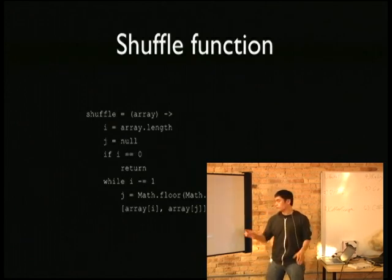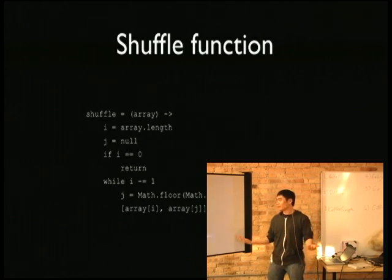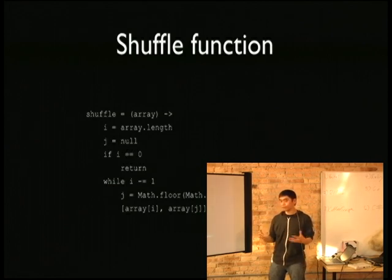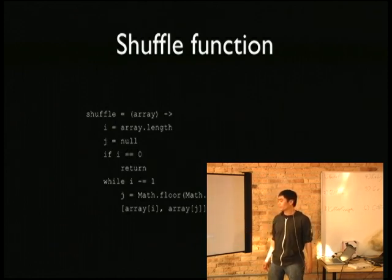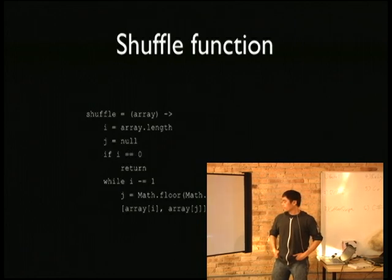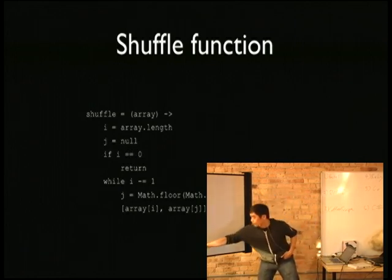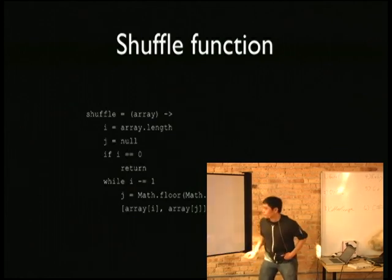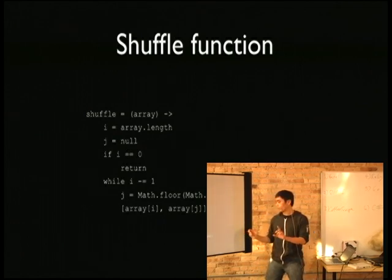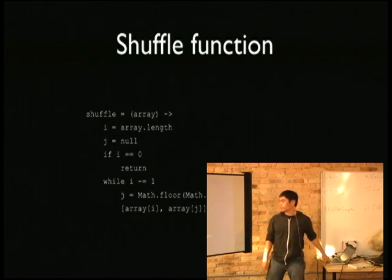CoffeeScript is very, very terse. There's no def keyword at all. The way you define a function is you just have this little arrow keyword — maybe that comes from Haskell — and the reason for that is to avoid having to write 'function' all the time, which you would do in JavaScript. You also see there's no colon needed for the conditional statement. And there is destructuring assignment — at the very last line where I'm swapping the values of array i and array j, I don't need a temporary variable. That also comes from Python.